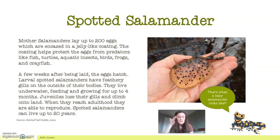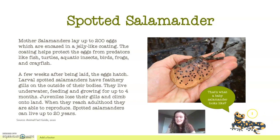A few weeks after being laid, the eggs hatch. Larvae spotted salamanders have feathery gills on the outside of their bodies. They live underwater, feeding and growing for up to four months. Then juvenile salamanders lose their gills and climb onto land. When they reach adulthood, they are able to reproduce. Spotted salamanders can live up to 20 years. This is what their eggs look like — it kind of looks like goop, but inside those little black dots are all baby salamanders.